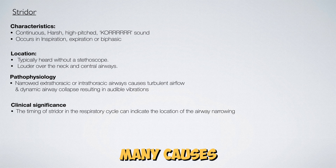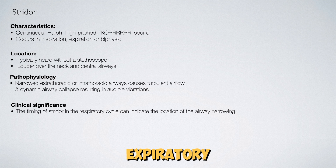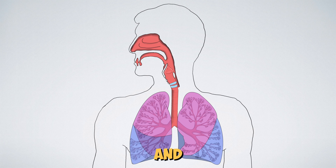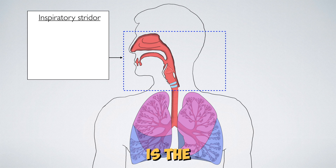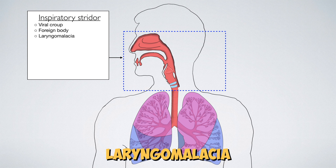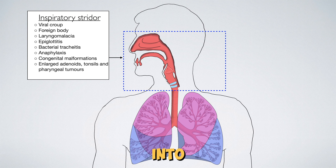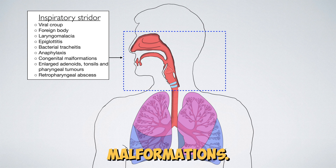There are many causes of stridor, which can be divided clinically based on whether the stridor is inspiratory, expiratory, or biphasic. Stridor generally occurs more often in children, and inspiratory stridor is the most common type. Viral croup, foreign body, and laryngomalacia are the most common forms in children, and these can be grouped into inflammatory or infective swellings, tumours, or congenital malformations.